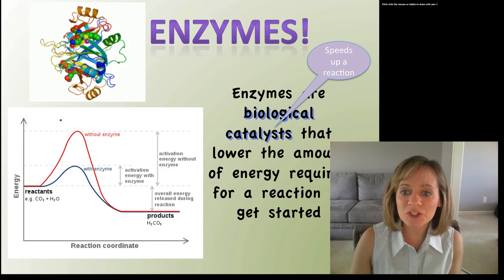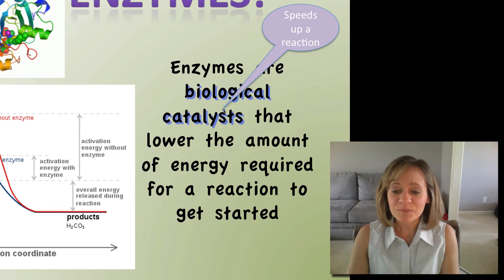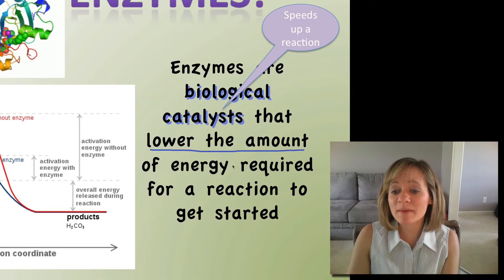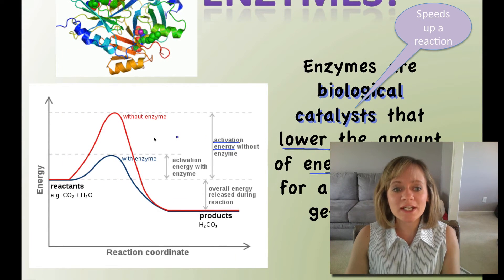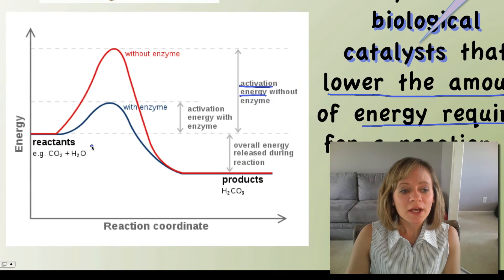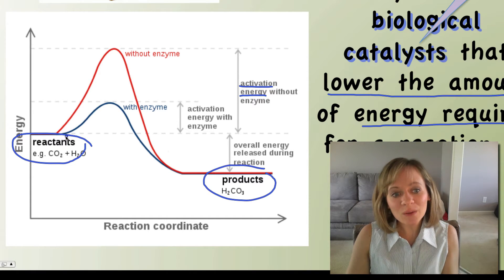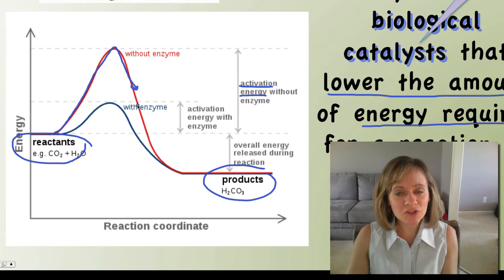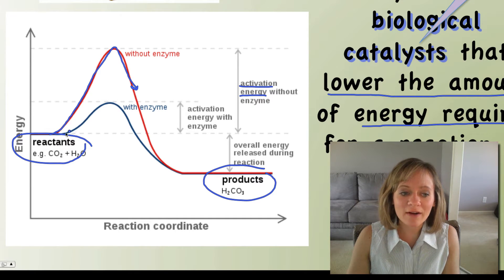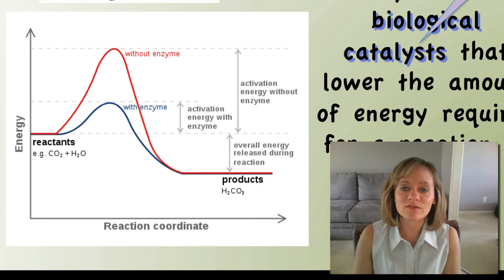Your body has enzymes to solve this problem. Enzymes are biological catalysts - a catalyst speeds up a reaction, and biological means it's within a living system. Enzymes function by lowering the initial amount of energy required to get a reaction started, which we call the activation energy. Looking at the graph, here are the reactants - glucose and oxygen - and here are the products. Without an enzyme it takes a lot of energy to get the reaction started, but adding a biological catalyst lowers the energy required, so the reaction can proceed faster without waiting to build up ATP energy.